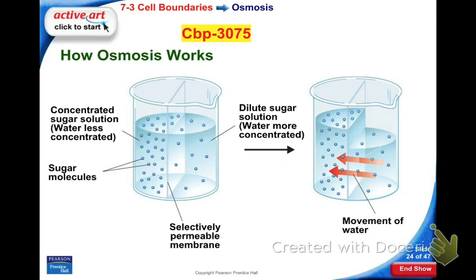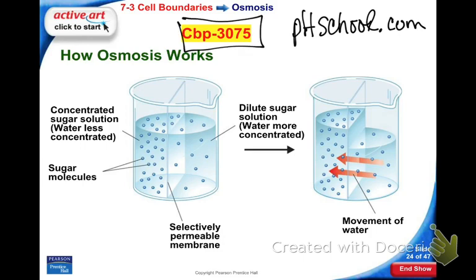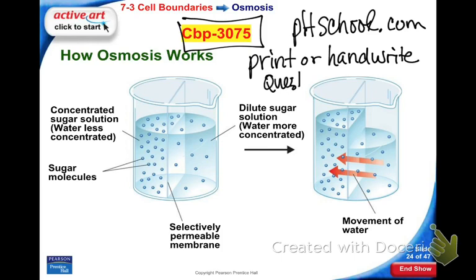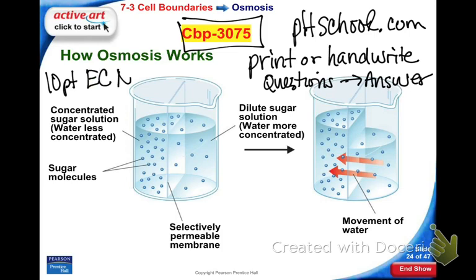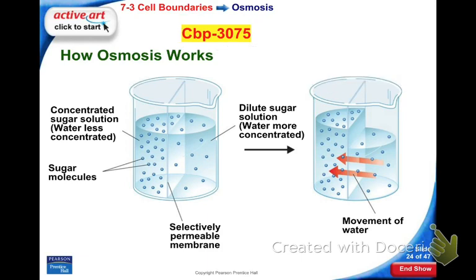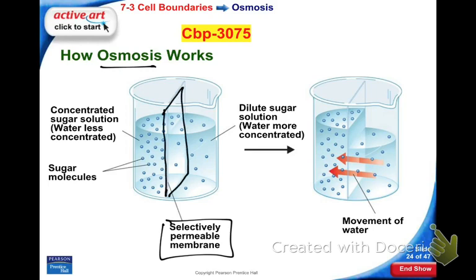Here is your second opportunity for extra credit. Again, you're going to phschool.com and entering web code CBP3075. You will do a simulation on how osmosis works, then either print or handwrite the questions and do your answers for another 10 points of extra credit on your notebook. Here we're looking at osmosis — a selectively permeable membrane runs down through the container. This membrane allows water through, but sugar molecules are too large to pass through.